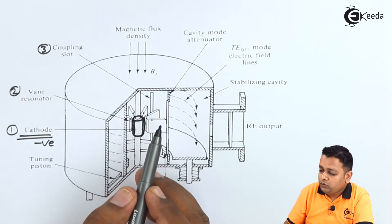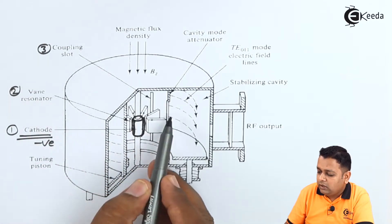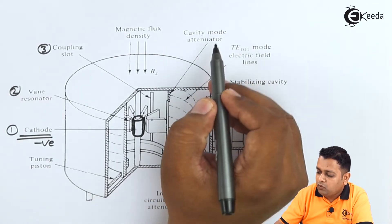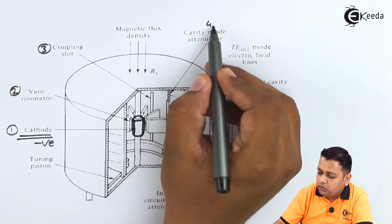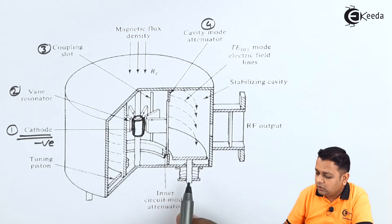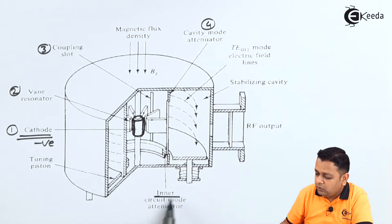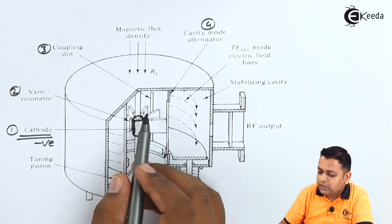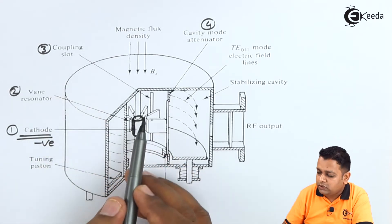Now for these coupling slots, thereupon we have the cavity mode attenuator to control the operation. Here also we have the inner circuit mode attenuator beside this particular coupling slots of the resonant circuit.